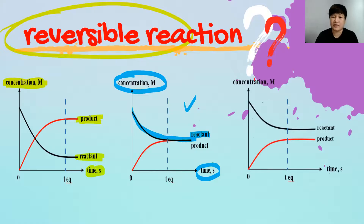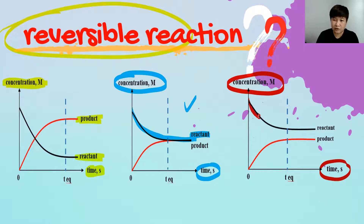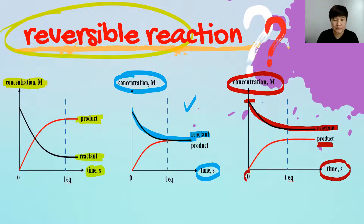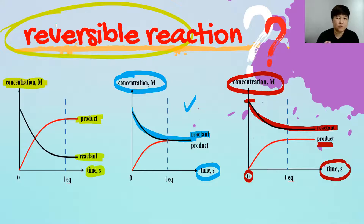Another type of concentration versus time curve for a reversible reaction again shows the reactant decreasing from a higher value to a lower value, because some reactant is converted to product. The product starts from zero and increases as the reactant decreases. The condition remains the same — the reactant cannot become zero, because the reaction can proceed both forward and backward, so there will always be reactant left at the end.